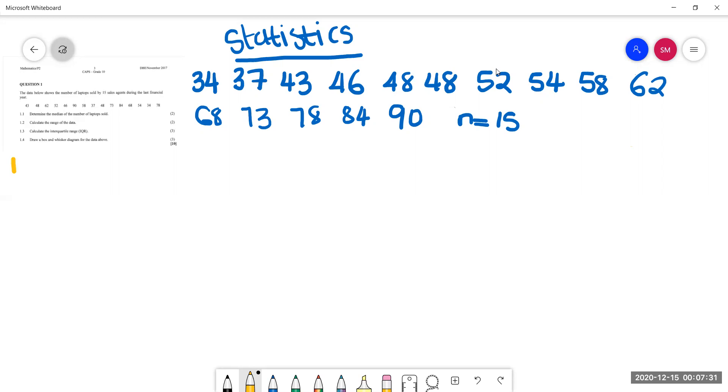Question 1.1 says determine the median of the number of laptops sold. So median is also known as Q2. To do that, we will need to find the position which sits at half of our data set and that becomes half of 15 plus 1. That gives us 8.